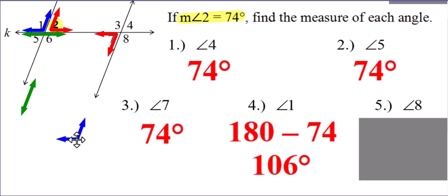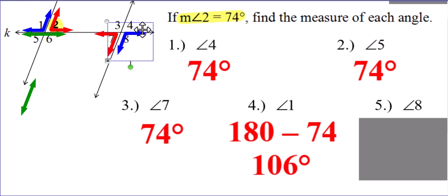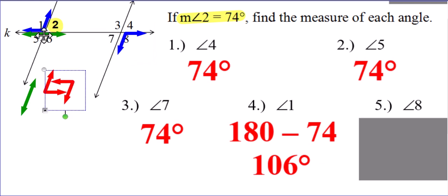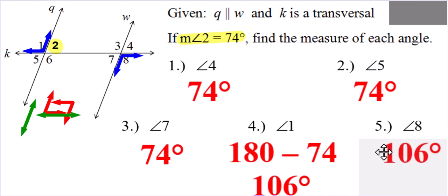And then finally, angle eight. Angle eight is also going to be 106 degrees, and I'll prove it to you. Angle eight and angle one are a pair of alternate exterior angles. I've actually had some kids who will find the measure of angle eight first and then get the measure of angle one — so that's why I said earlier you can kind of go out of order if you wanted to.